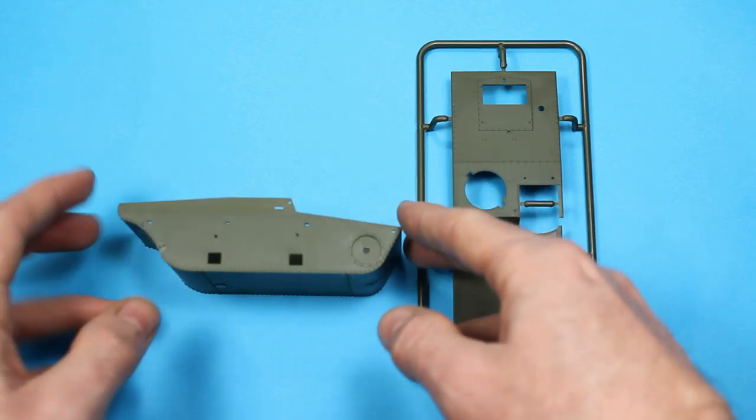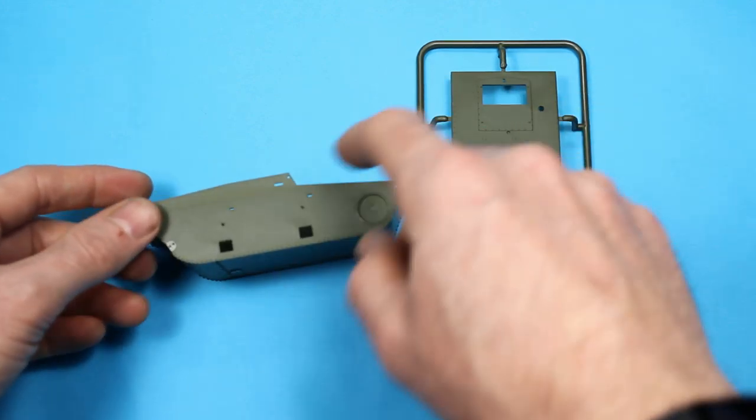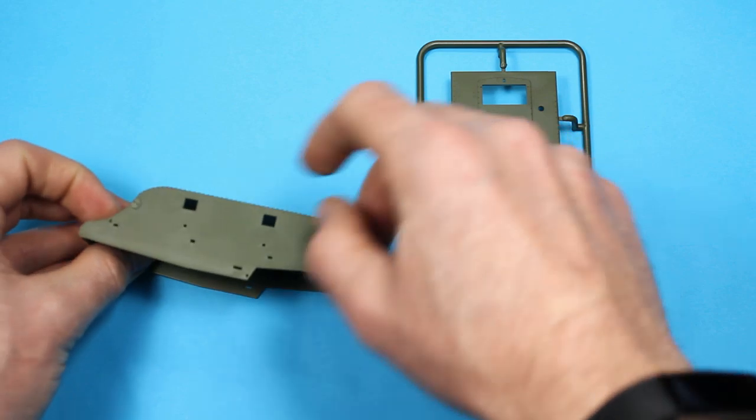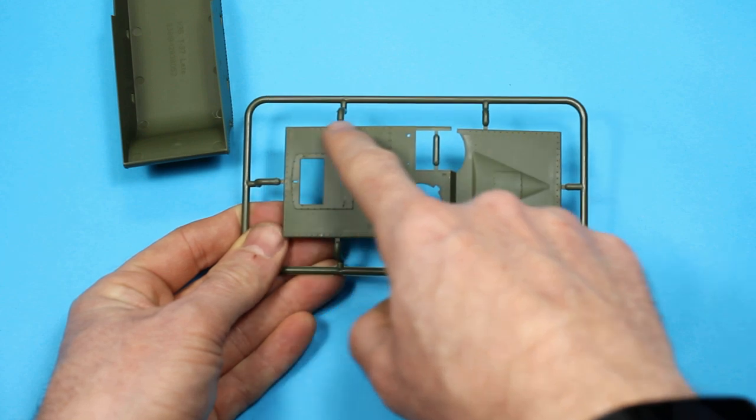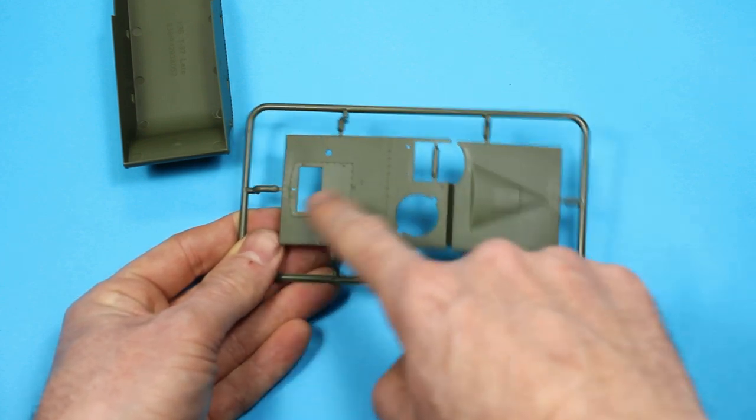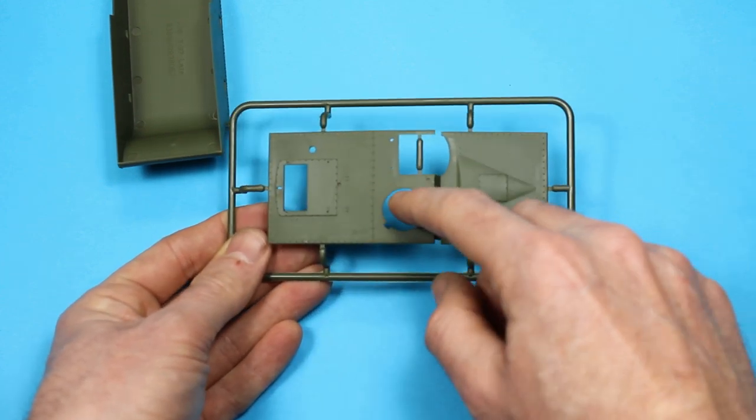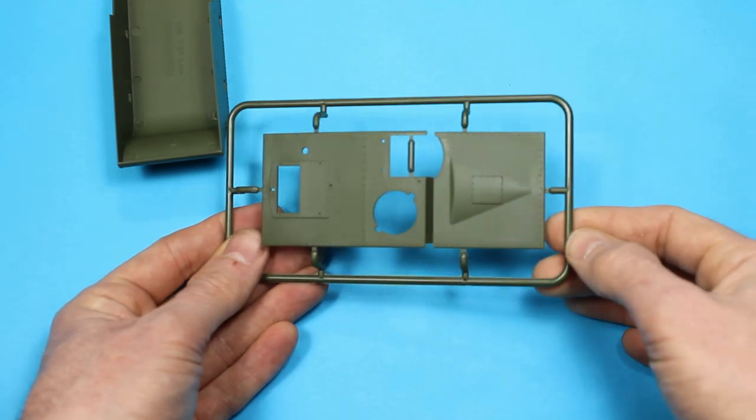That continues on the side walls as well. A little bit plain, obviously there's not much going on where the running gear goes on. Then we've again got recessed panel lines but nice strong raised details with bolt heads and rivets. That's looking really good.